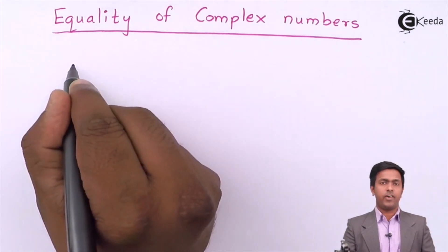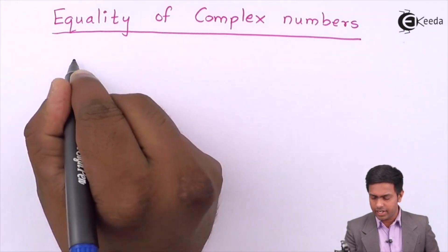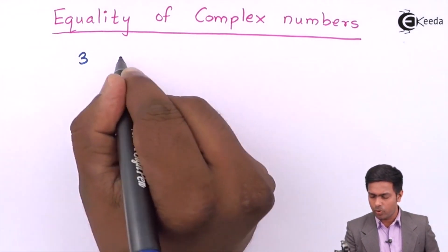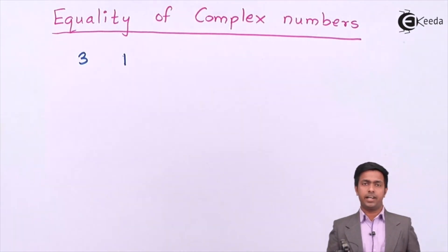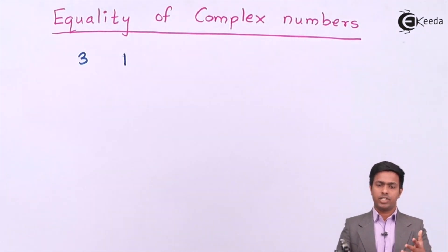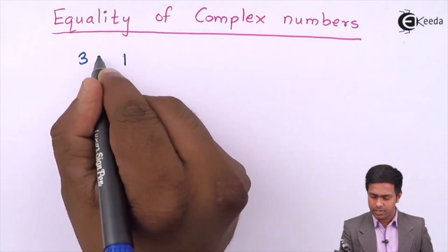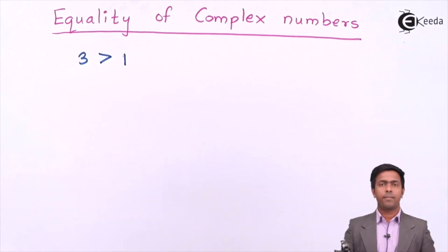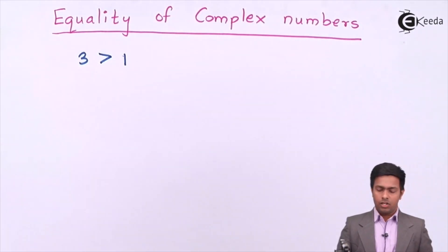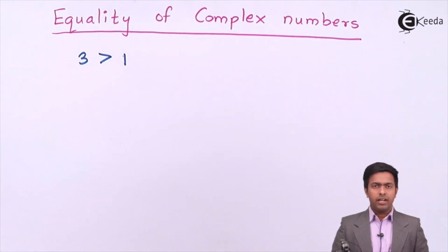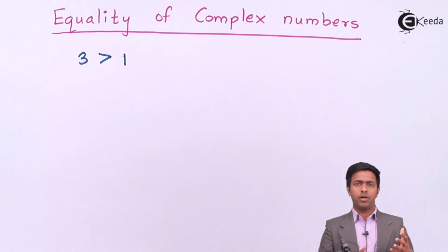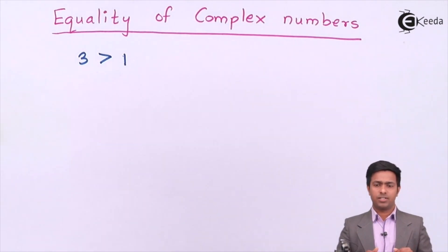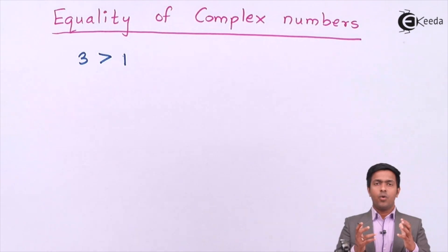Let's say if I have two numbers, one is three and one is one, and I ask you which number is greater — you will say three is the greatest number. So three is greater than one. It's very easy to find the greatest number in the case of real numbers.